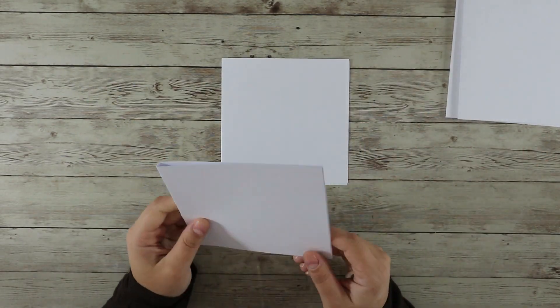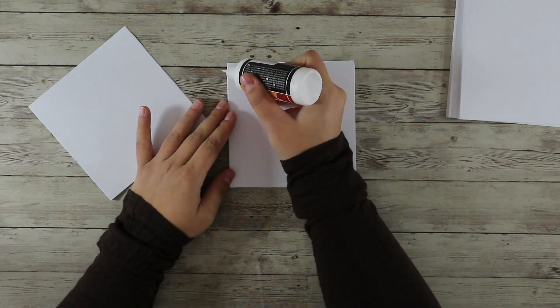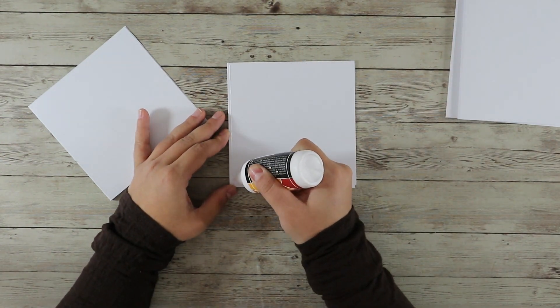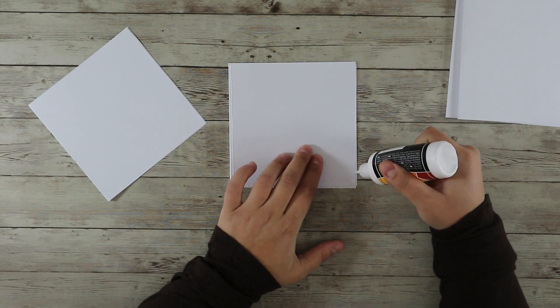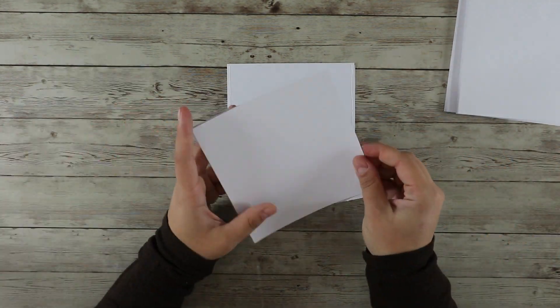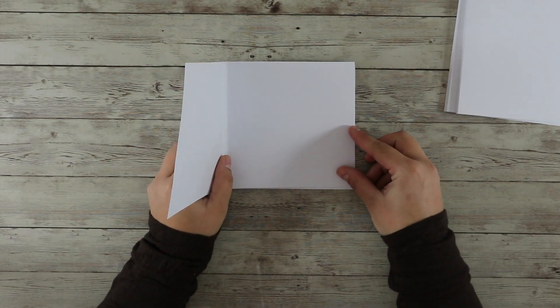I'm going to create a pocket on the top part, but you can stick the pages together if you don't want pockets, or you can even put glue on the three sides except the right side to create side pockets as well.